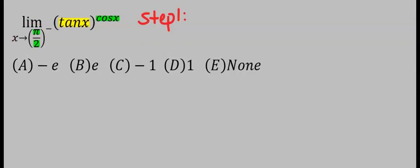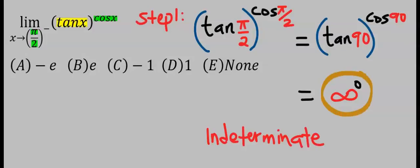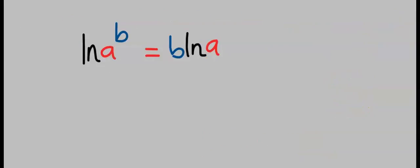Step number 1: Apply direct substitution. And by plugging, we got infinity to the power of 0, which is indeterminate. To apply step number 2, let's remember that the natural log of A to the power of B is the same thing as B times the natural log of A. You can see that this B came to the back of the natural log. We're going to apply this to the function.